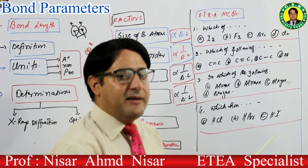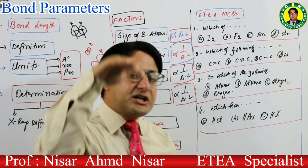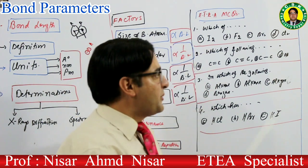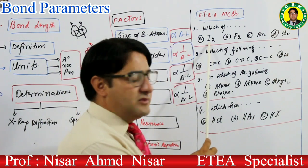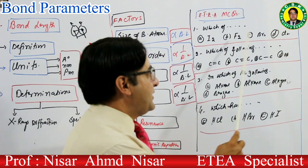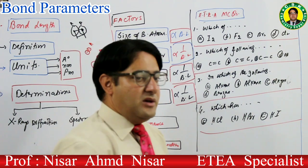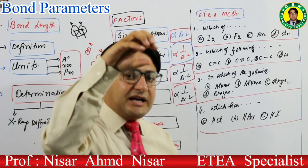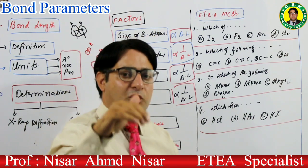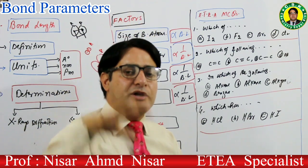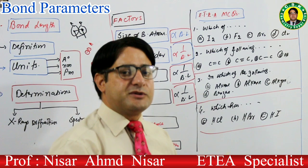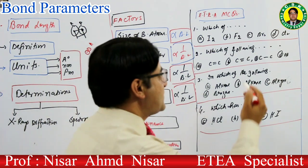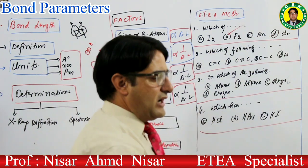ہمیں پتہ ہے کسی بھی group کے اندر نیچے کی طرف جاتے ہوئے size بڑھتا ہے۔ Halogen family لیں: fluorine، chlorine، bromine، iodine — پہلا member fluorine ہے جس کا size سب سے چھوٹا ہے، پھر chlorine، bromine، iodine۔ کس کی bond length سب سے کم ہوگی؟ جس کا size چھوٹا ہو — یعنی fluorine کی۔